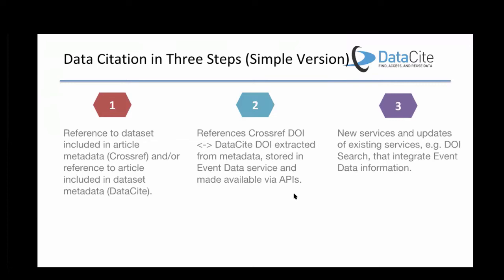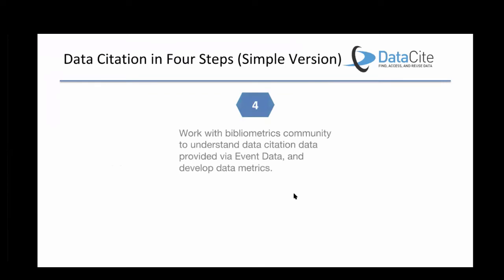The next step is that since this information is in an external service shared between the two of us, we can create new services on top of it and update existing services such as search interfaces that integrate with event data. We also want to work with the bibliometrics community in the future to better understand the data citation data provided via event data and help develop data metrics. At the moment, the data we're providing is really just displaying what people have put in — some of this is currently somewhat uncertain because it's early days.